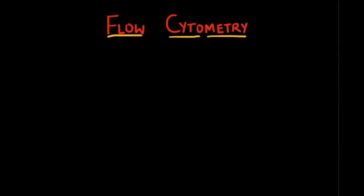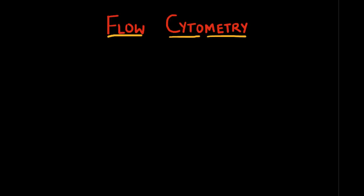As the name suggests, flow cytometry is a method used to measure flowing cells. This is achieved by suspending cells in a stream of fluid and passing them through an electronic detection apparatus.